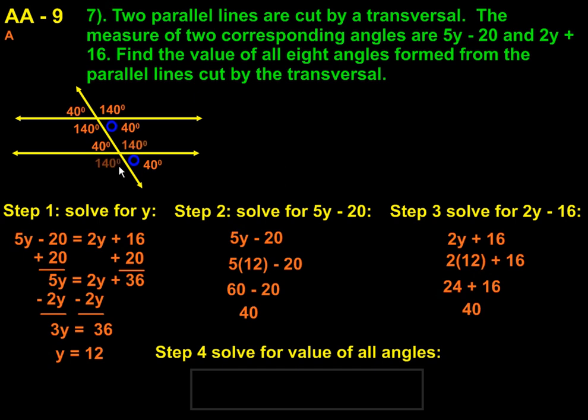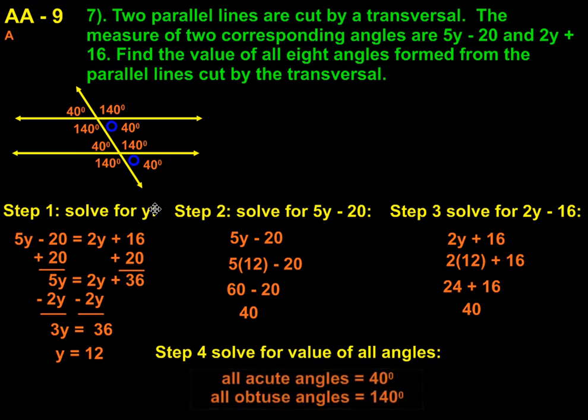So having to report out what's the easiest way to do this. Well, I think the easiest way to do it is if you notice, we have acute angles that are all worth 40 and obtuse angles that are all worth 140. So we could simply say that all the acute angles are worth 40 degrees and all the obtuse angles have a value of 140 degrees.